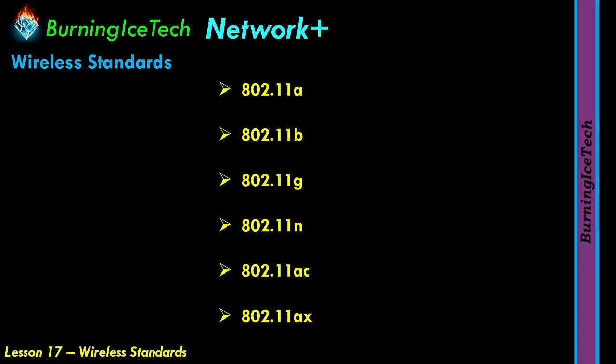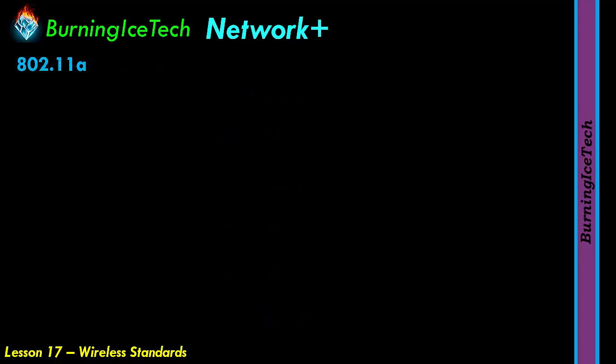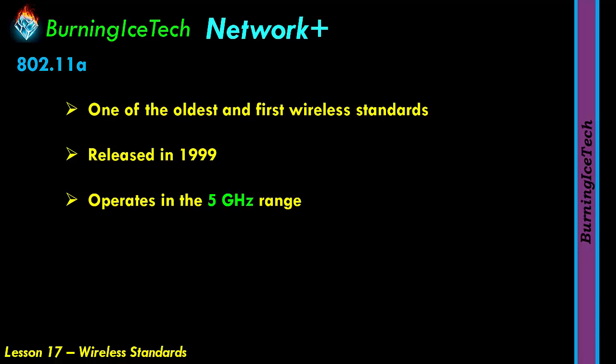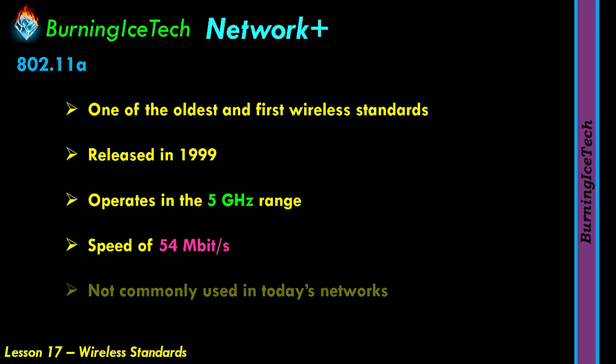Let's have a peek at the first standard on the list — 802.11a. This is actually one of the oldest wireless standards, originally released in 1999. This 802.11a standard operates in the 5 GHz range and has a speed of 54 Mbps. You'll find that this standard is still being used even today, but it's not commonly used anymore — you'll just see it here and there.